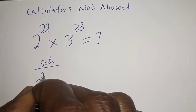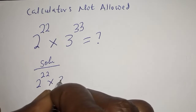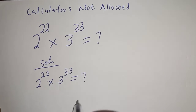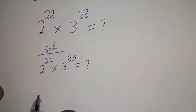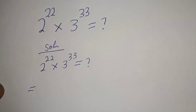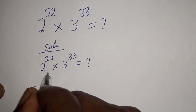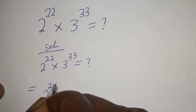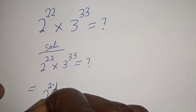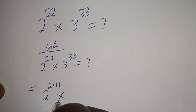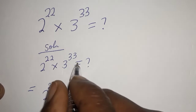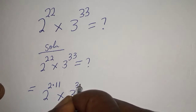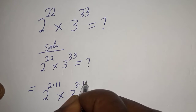2 raised to power 22 multiplied by 3 raised to power 33 is unknown. This is equal to 2 raised to power 22, written as 2 raised to power 2 multiplied by 11, multiplied by 3 raised to power 33, written as 3 raised to power 3 multiplied by 11.